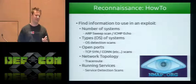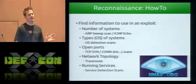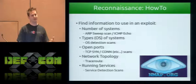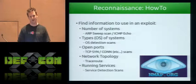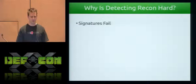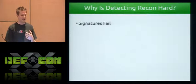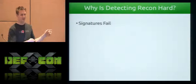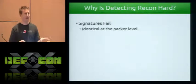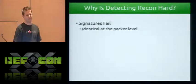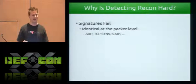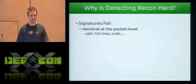So why is detecting reconnaissance hard? Signatures completely fail. If you think about how reconnaissance is performed, all the packets involved are identical at the packet level to normal traffic. TCP SYNs happen all the time — you can't put a firewall signature for that, or you'd be inundated with false positives. ARP, TCP SYNs, ICMP — all this stuff is just the normal workings of networks. That's just how TCP/IP works. You can't just put a firewall signature rule for that stuff.